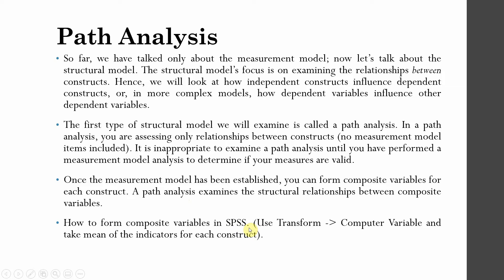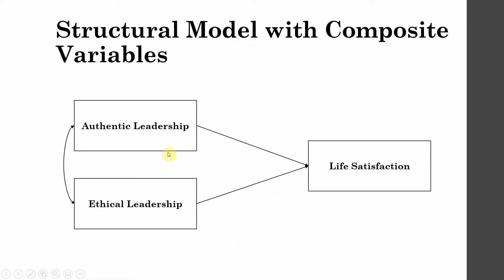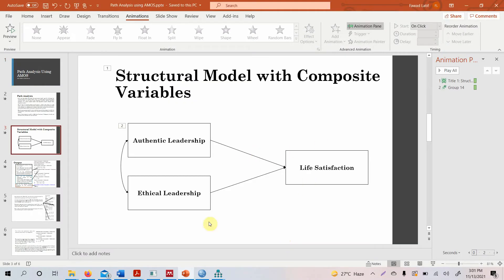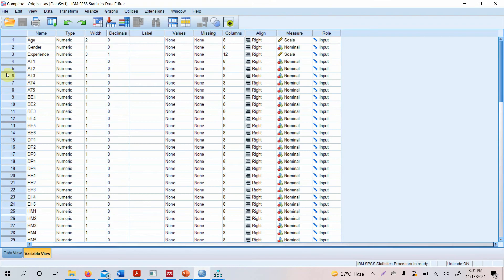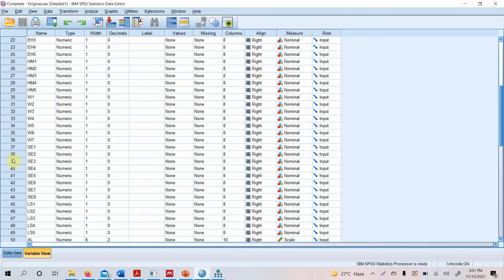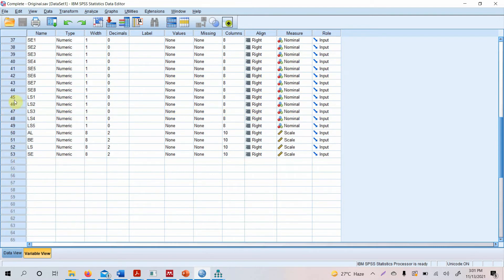To form composite variables in SPSS, go to Transform > Compute Variable and take the mean of the indicators for each construct. Now here is a sample model we are going to use for this video — this is the path analysis we are going to perform. In my dataset I have authentic leadership, ethical leadership, some other constructs, and life satisfaction.